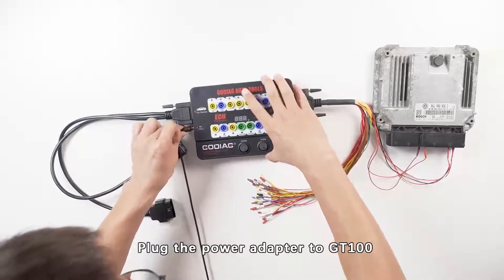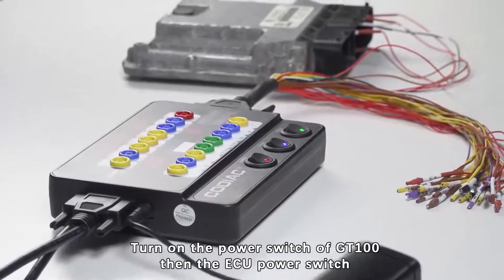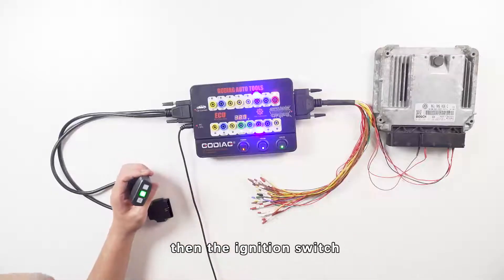Plug the power adapter to GD100. Turn on the power switch of GD100, then the ECU power switch, then the ignition switch.